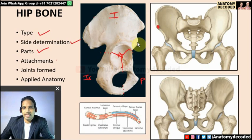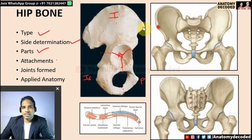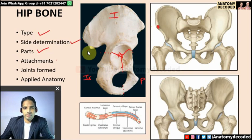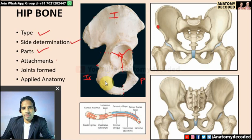Bony projections on the ilium include: anterior superior iliac spine, anterior inferior iliac spine, posterior superior iliac spine, and posterior inferior iliac spine. There is also a tubercle of the iliac crest, located five centimeters behind the anterior superior iliac spine. In the ischium, notable features are the ischial spine and ischial tuberosity.